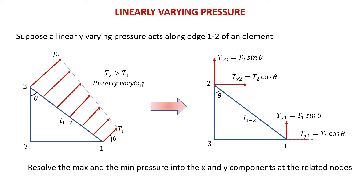Now let's discuss about linear varying pressure, or non-uniform linear pressure. Suppose a linearly varying pressure acts along edge H12 of an element as shown. Node 1 sustains the minimum pressure while node 2 sustains the maximum pressure. The pressure is acting in the local direction, so we have to resolve it into the global direction. Therefore, we first determine theta.